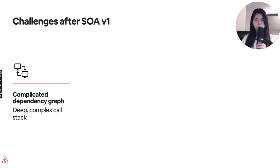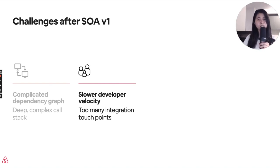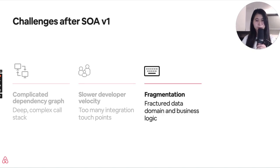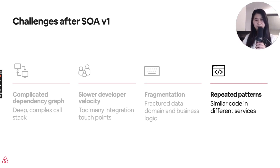It's difficult to debug and triage when the service dependency graph is so entangled. Having that deep, complex call stack was really impacting the way that we were working. There are many different integration points required to make a change, which slowed down developer velocity. With services owned by different teams, this also creates a higher collaboration overhead in order to get a feature done. Our data and our business logic began to be fragmented across multiple services, and we were beginning to see repeated patterns in different services. For example, a lot of services were made to load different parts of data, and this data-loading code was boilerplate that was very similar across services, yet we had multiple services owned by different teams having similar functionality.